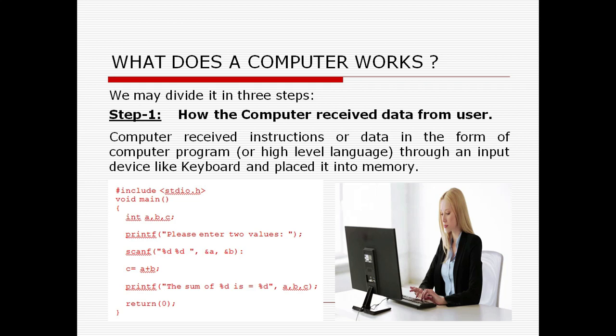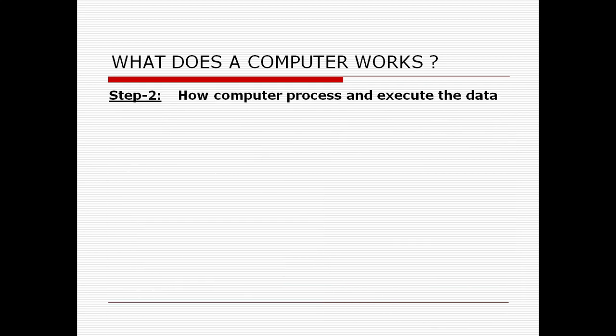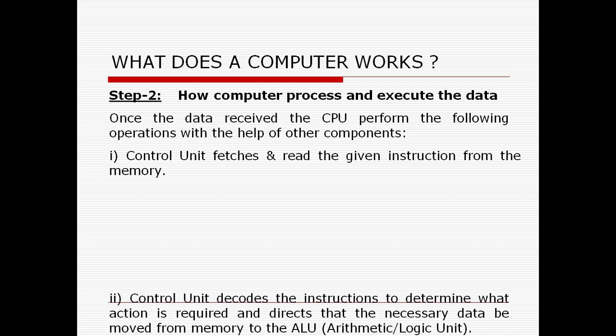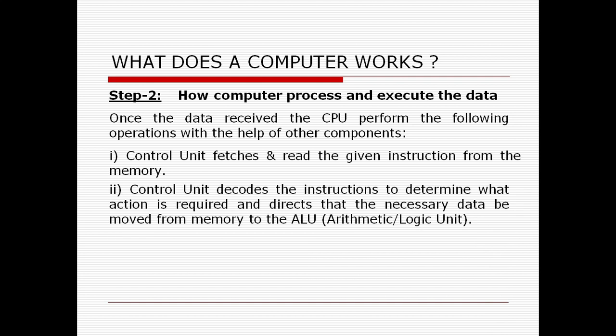Step two: how computer processes and executes the data. Once the data is received, the CPU performs the following operations with the help of other components. Control unit fetches and reads the given instruction from the memory. Control unit decodes the instructions to determine what action is required and directs that the necessary data be moved from memory to the arithmetic logic unit.